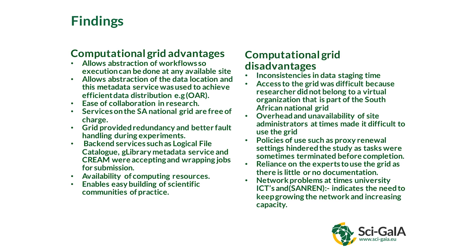You get all these advantages. The grid also provides redundancy — when running on a single server and the machine fails, you're stuck. On the grid, work is taken back from the failed machine and reprocessed elsewhere. The back-end services, including G-library and the logical file catalog, are part of why SciGAIA has been valuable. G-library was used in this research. The availability of computing resources also increases because you're pooling computers together for a single task.